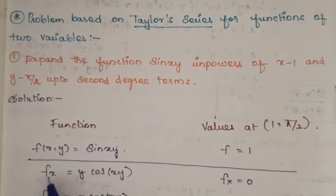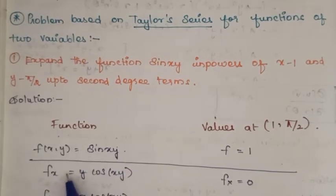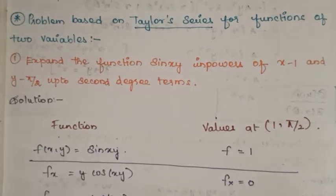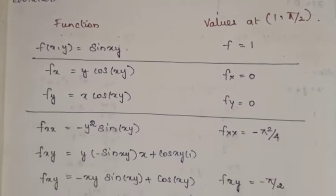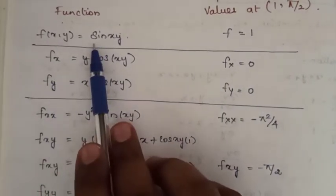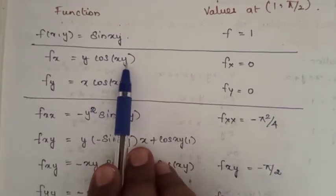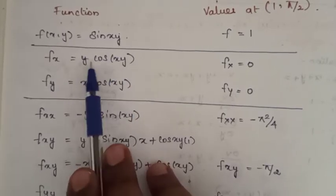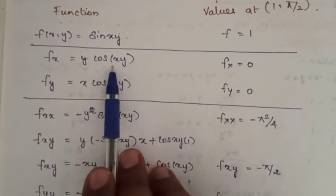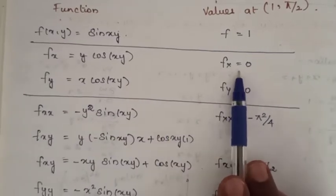Next, differentiate f(x,y) = sin(xy) with respect to x to get fx. Differentiating sin(θ) gives cos(θ), so we get cos(xy). Then differentiating xy with respect to x gives y. So fx = y·cos(xy). Substituting x = 1, y = π/2: fx(a, b) = 0, since cos(π/2) = 0.